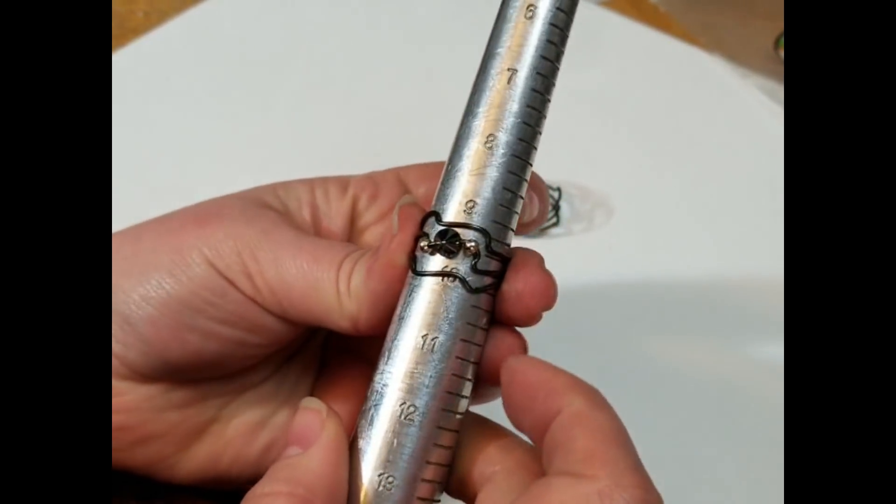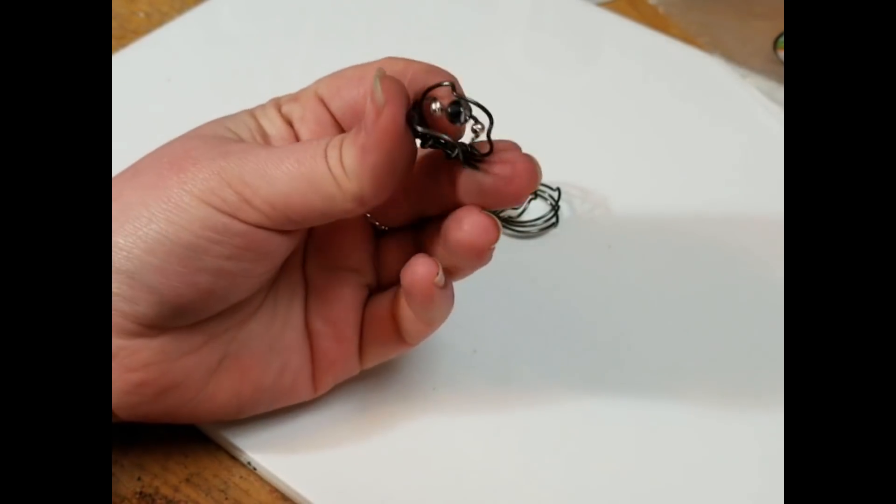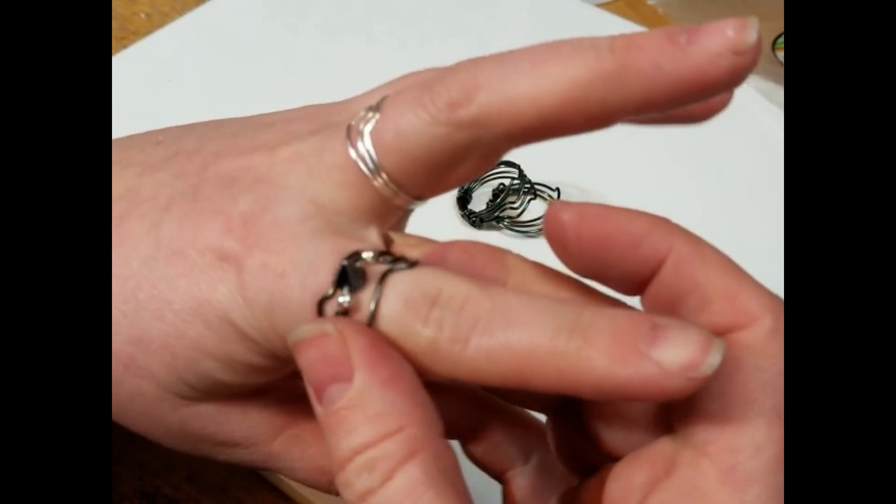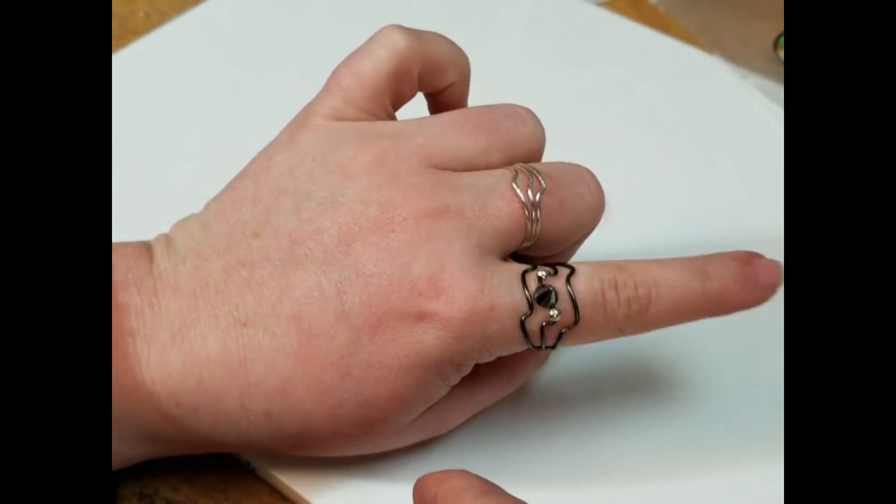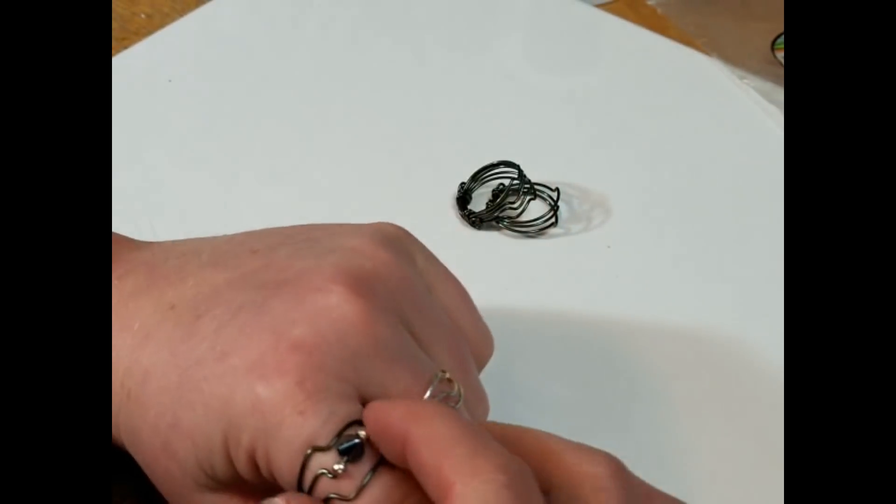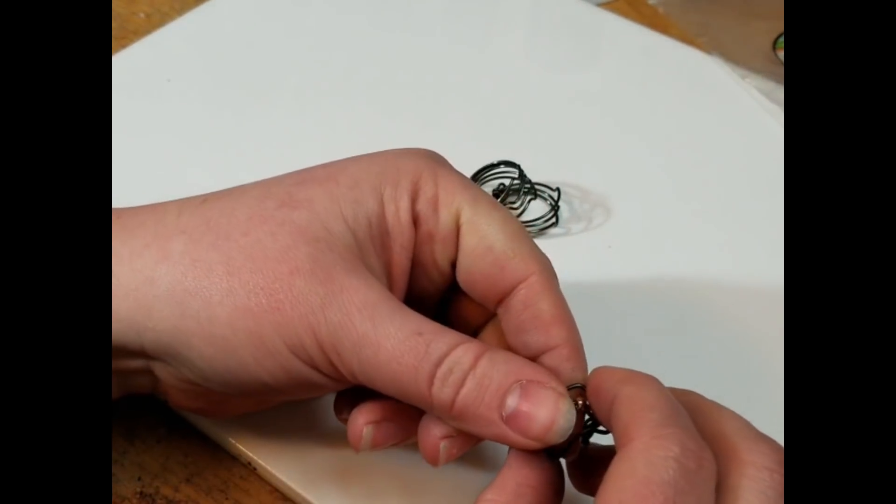And kind of space everything out nice and evenly, and now we have a very cute little squiggle ring with some beads on it. And you could put any old bead that you like on there, really.